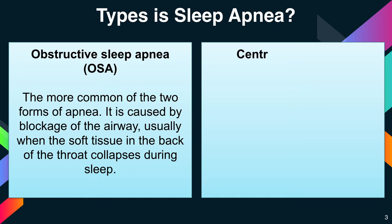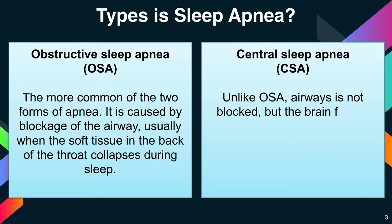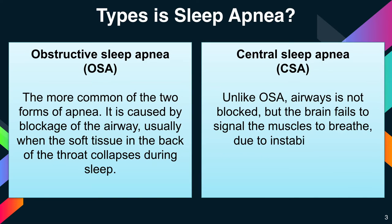The second type is central sleep apnea. Unlike obstructive sleep apnea, the airway is not blocked, but the brain fails to signal the muscles to breathe due to instability in the respiratory control center.